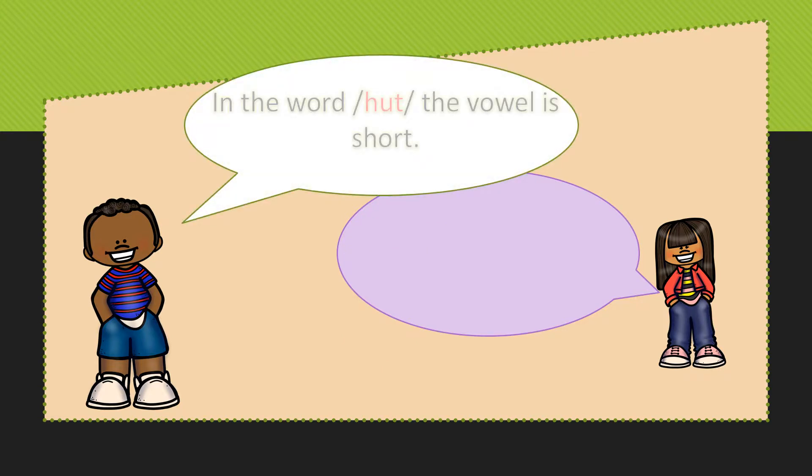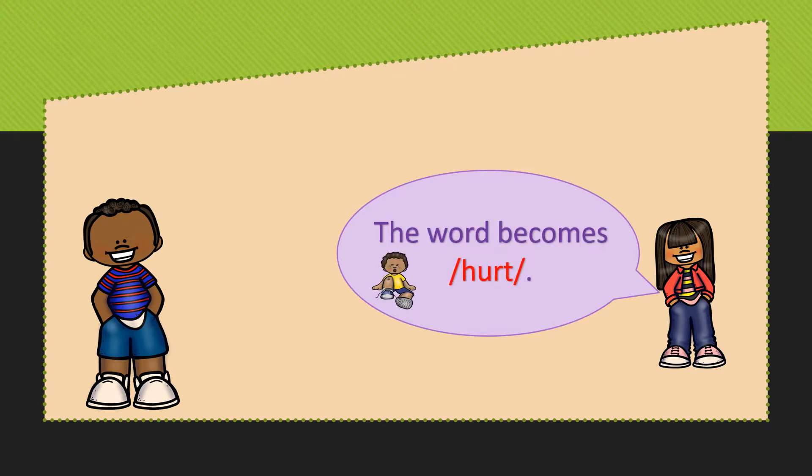In the word hot, the vowel is short, it's a closed syllable. But when you put an R next to the U, it says ER and now hot becomes hurt.